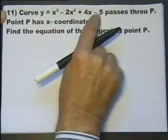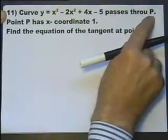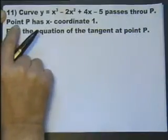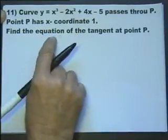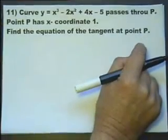The curve is given by this equation: y = x³ - 2x² + 4x - 5. It passes through a point P and the point P has an x-coordinate of 1. Find the equation of the tangent at the point P.